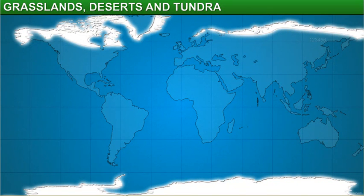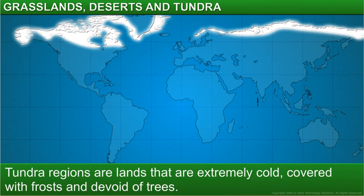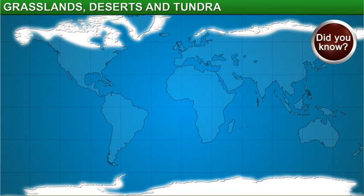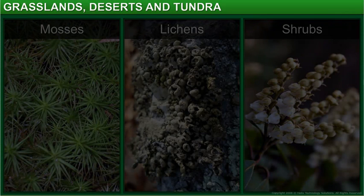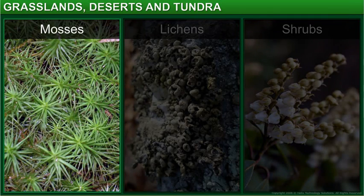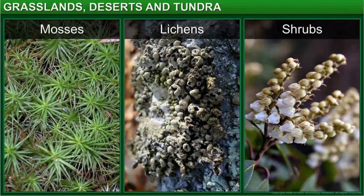Tundra regions are lands that are extremely cold, covered with frost, and devoid of trees. Did you know that the word tundra comes from the Finnish word 'Tunturia', which means a barren land? The vegetation in these regions is sparse and limited to mosses, lichens, and very small shrubs.